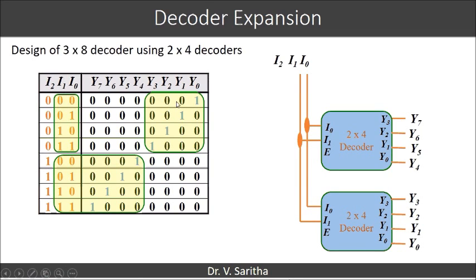When I2 is 0, outputs are y0 y1 y2 y3. So I2 will be negated and connected to the enable input of the decoder. If I2 is 0, then we will get 1 here and make E as 1 for this decoder and this decoder is enabled. We will get the outputs of y0 y1 y2 y3 depending upon I1 and I0.